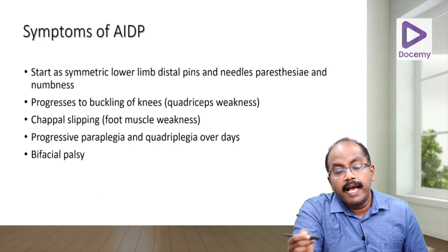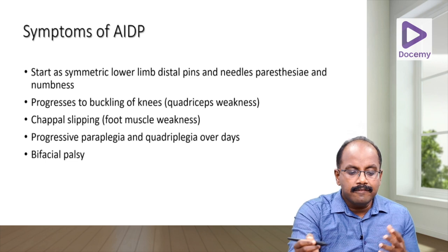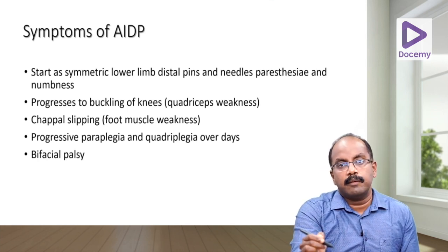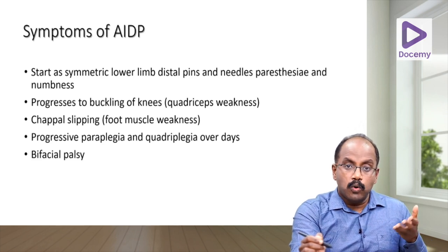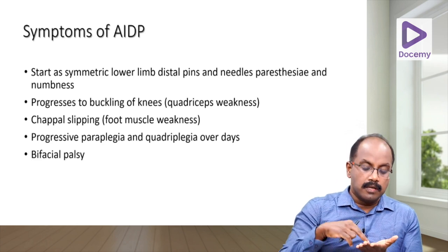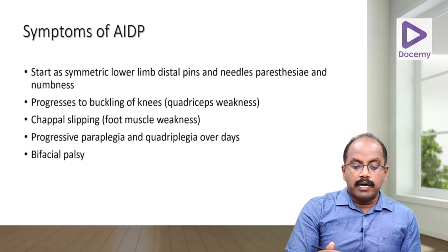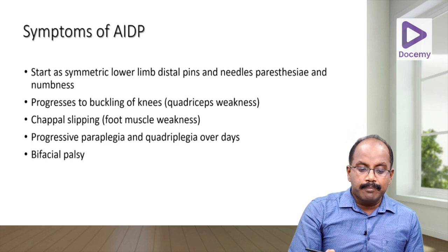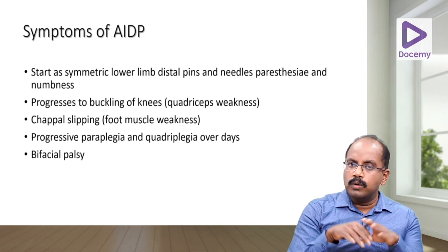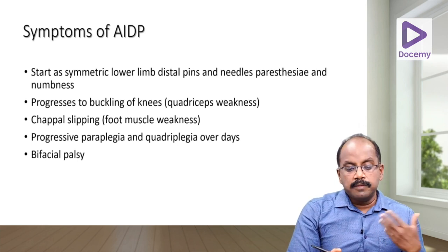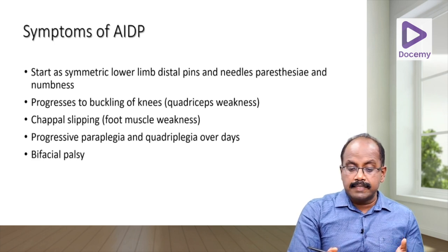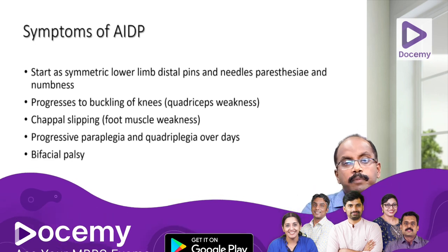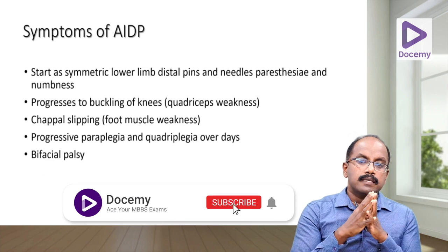In AIDP — the most common type — patients typically start with symmetric lower limb pins-and-needles paresthesia and numbness in the feet, which slowly ascend over hours to days. This progresses to buckling of the knee due to quadriceps weakness, chappal slipping due to foot muscle weakness, and then progressive paraplegia. Later, patients develop quadriplegia and may also develop bilateral facial nerve palsy.